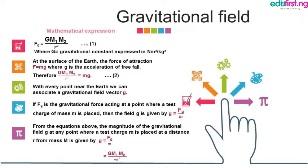At the surface of the earth, the force of attraction F is given as Mg. Remember, force is normally given as F = MA, where A is the acceleration. But here, because we're talking about gravitational field, F equals Mg, where g is the acceleration of free fall — the acceleration due to gravity. Therefore, GM1M2 divided by R squared equals Mg.